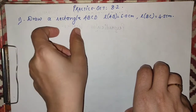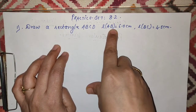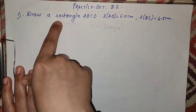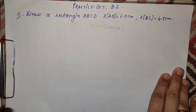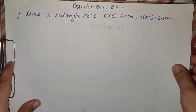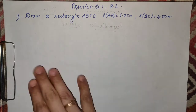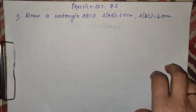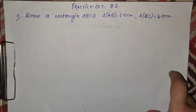By heart the properties of all the quadrilaterals which I have already shown you in my previous video. Based on those properties, we can solve the construction part. क्योंकि construction में बहुत सारी चीज़ें नहीं दी होती हैं इस type के questions में। जैसे यह rectangle है — देखो इस question में क्या है: Draw a rectangle ABCD, AB is 6.0 and BC is 4.5.